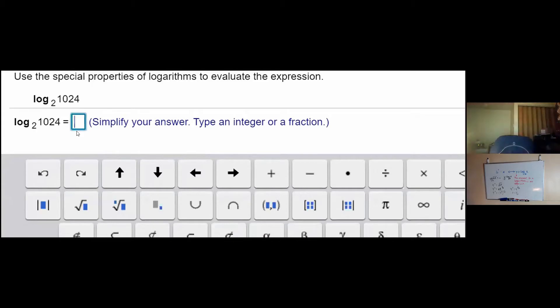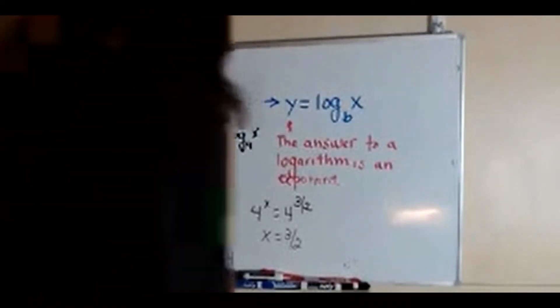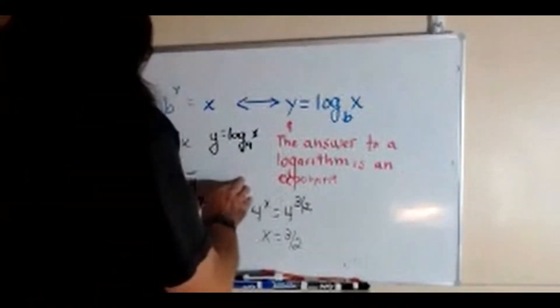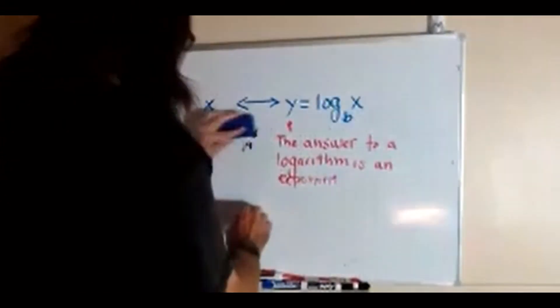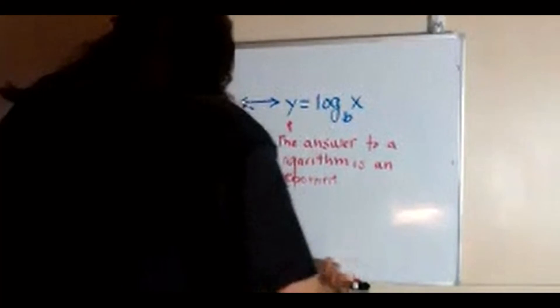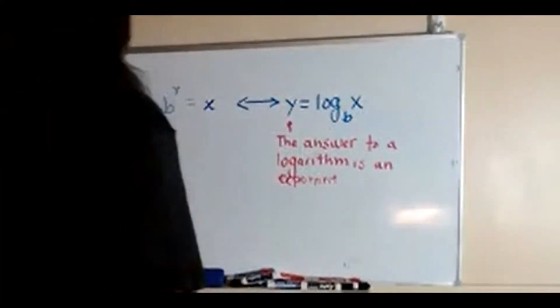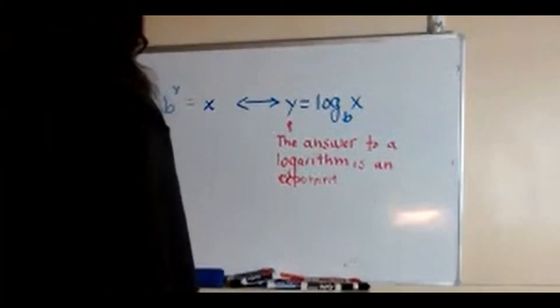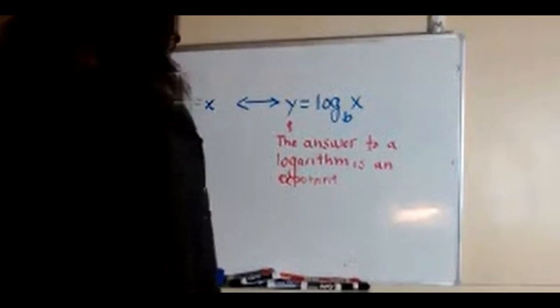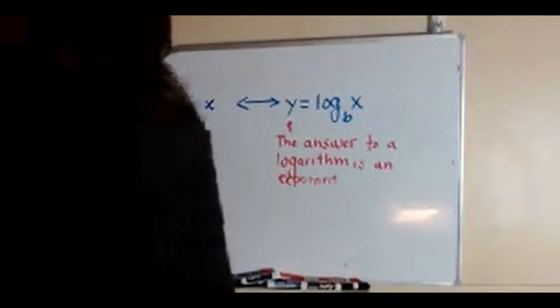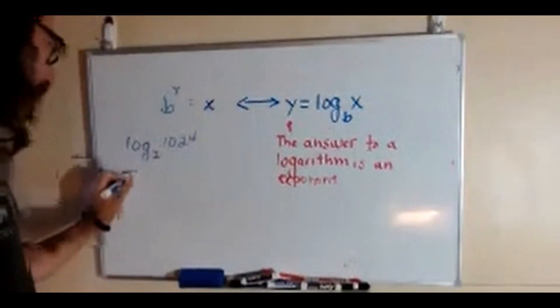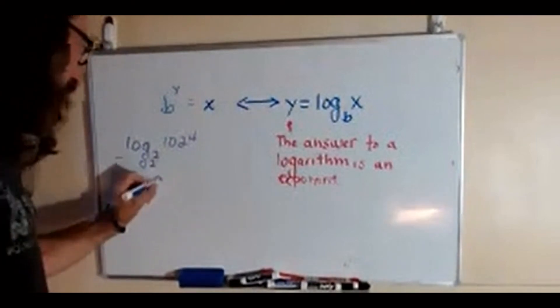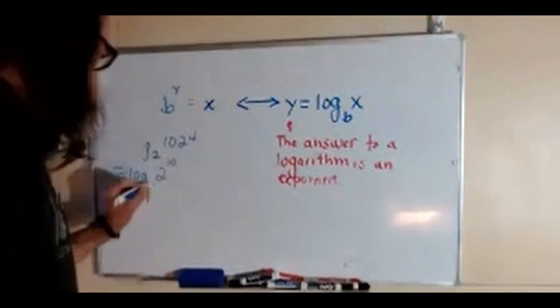1024 is 2 to the 10th power. So we can rewrite that as log of 2 to the 10th, base 2.